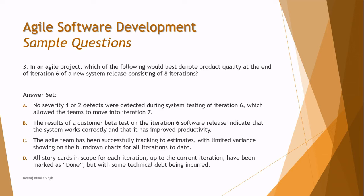Option C: the agile team has been successfully tracking estimates with limited variation showing on the burndown charts. That should begin at an early stage — you should not wait for iteration 6 to complete before tracking this.